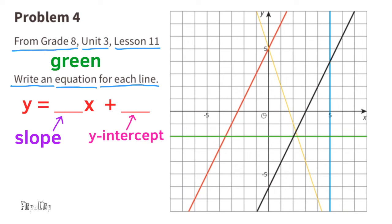Let's start with the green line. The green line has 0 slope, so we insert a 0 in this space, and the y-intercept is at negative 2, so we insert a negative 2 in this space.